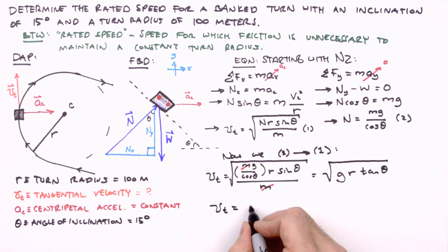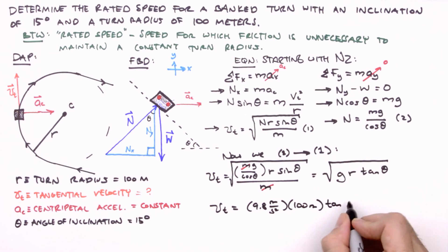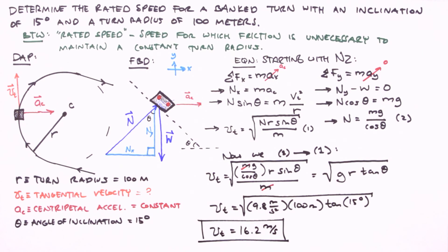Inserting our values for g, r, and theta, we find out that the tangential velocity of a body undergoing uniform circular motion around a banked curve of these specifications, and therefore the rated speed of the turn, is 16.2 meters per second, which works out to be about 35 miles per hour.